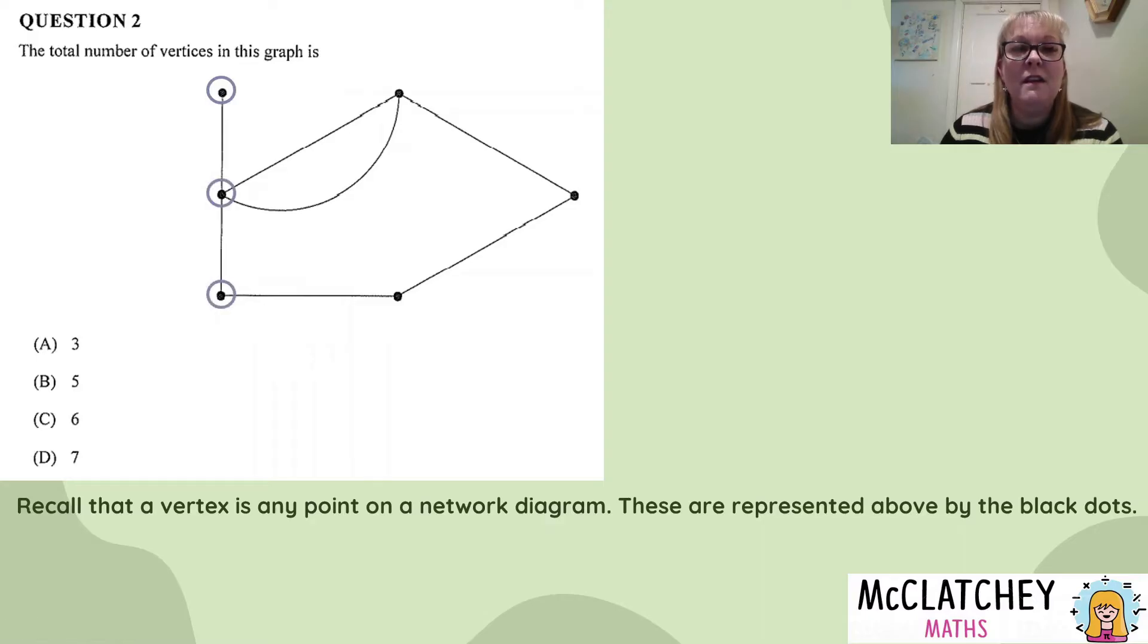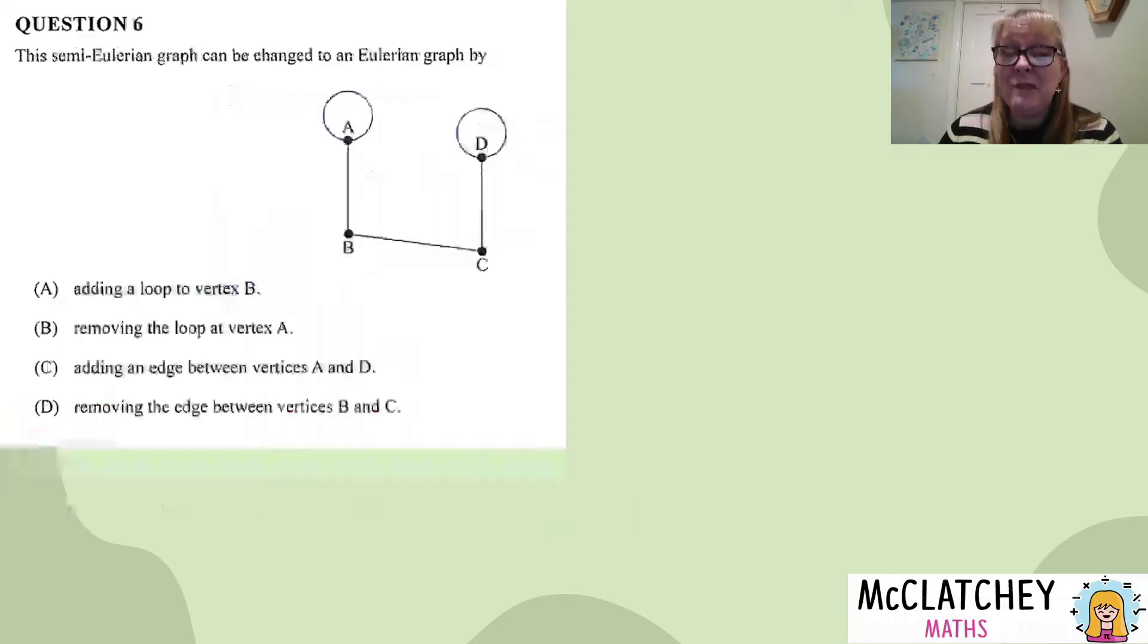So let's count them off one by one. One, two, three, four, five, six. That makes it a very quick answer. The answer is C. As long as you know what your vocabulary means, you'll be pretty straight with some of these questions.